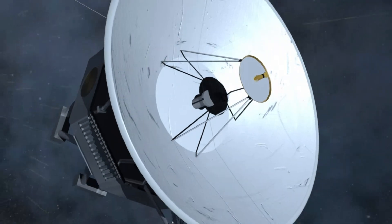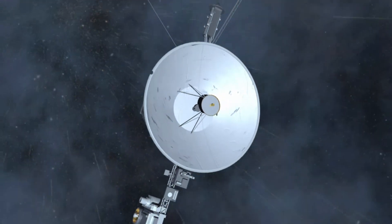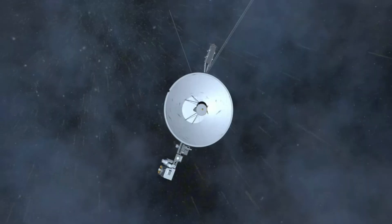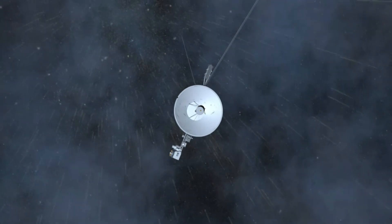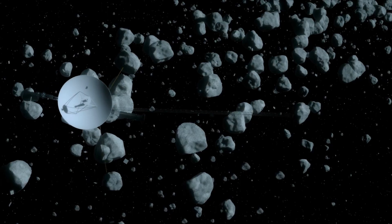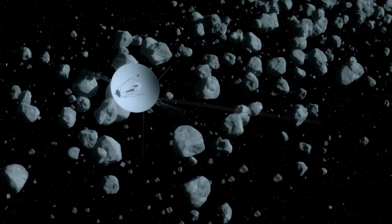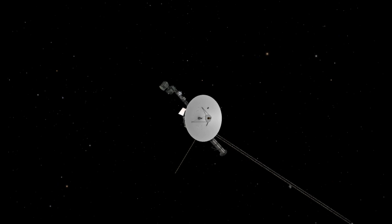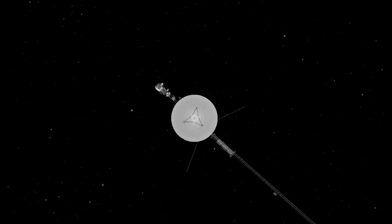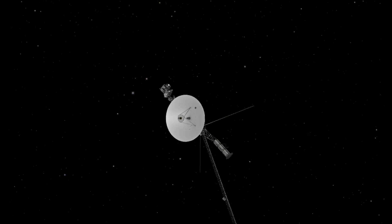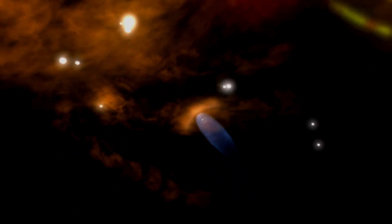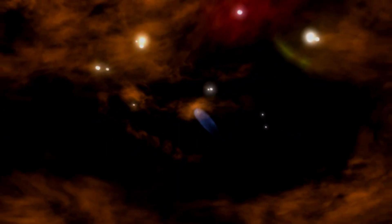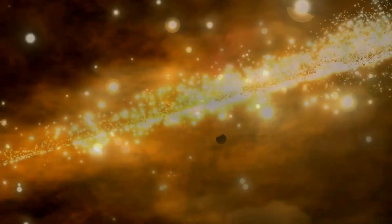But Voyager's greatest enemies are time and power. It gets its energy from a nuclear battery that generates heat from decaying plutonium. The power of this battery decreases by about 4 watts each year. For years, NASA has been shutting down instruments one by one to keep vital systems running. It is estimated that around the year 2036, Voyager will no longer have enough power to send us data.